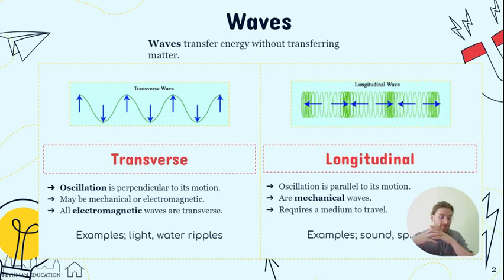When it comes to the two different types of waves we have transverse and longitudinal. Let's look at transverse first. We can say that transverse waves oscillate in a perpendicular pattern to its motion. Oscillation means to go back and forth, up or down. When it comes to transverse waves, it is going up and down but it's moving to the side, so it's perpendicular to the motion.